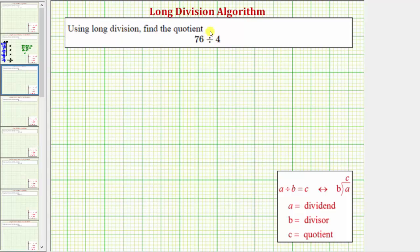We want to use long division to find the quotient. We have a two-digit number divided by a one-digit number. In this example, we'll use the traditional long division algorithm to find this quotient.